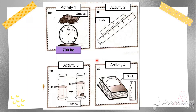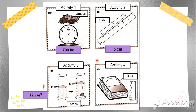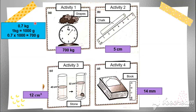Let's look at the measurements for the activity. One answer given was 700 kilogram — that is wrong. It should be 700 gram. The reading on the scale is 0.7 kilogram. Since 1 kilogram equals 1000 grams, 0.7 multiplied by 1000 gives you 700 grams. That is the correct answer.